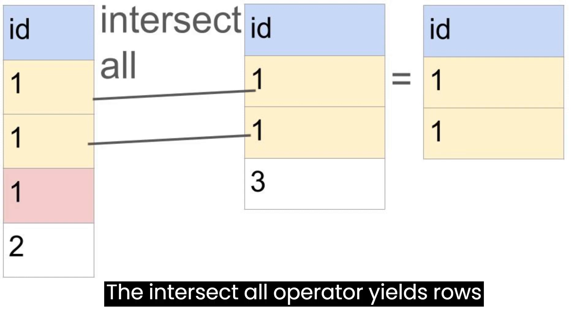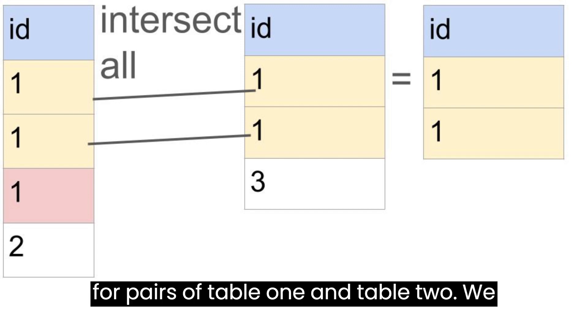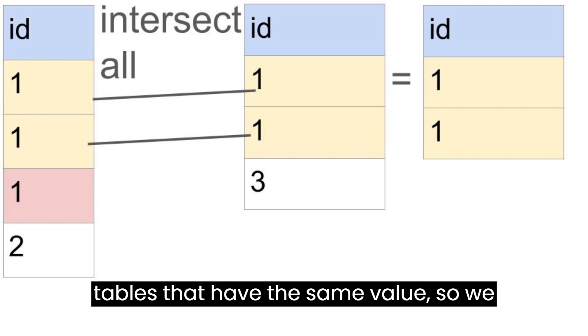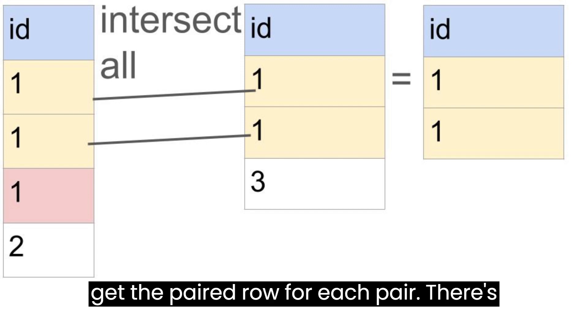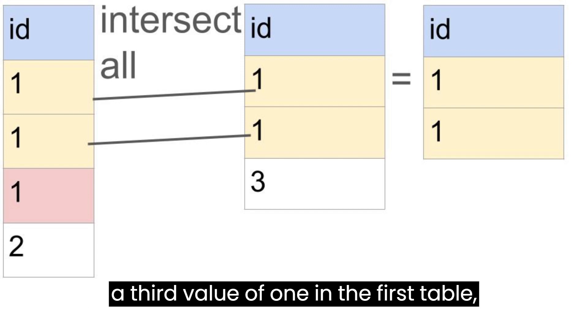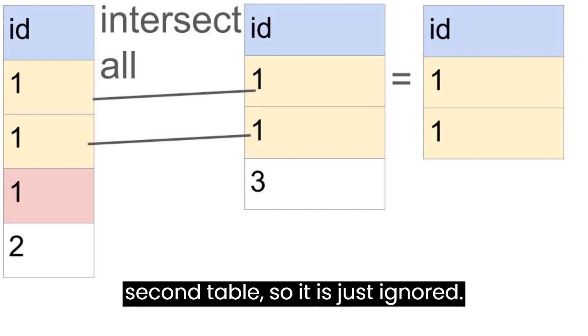The INTERSECT ALL operator yields rows for pairs of table 1 and table 2. We can create two pairs of rows from the two tables that have the same value, so we get the paired row for each pair. There is a third value of 1 in the first table, but it can't find its own match in the second table, so it is just ignored.